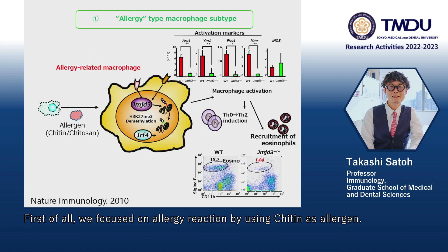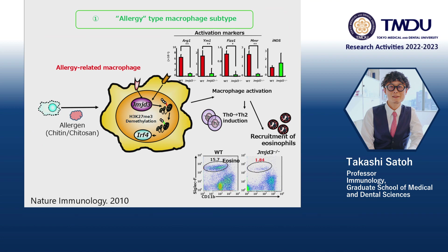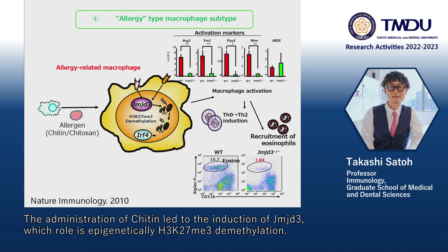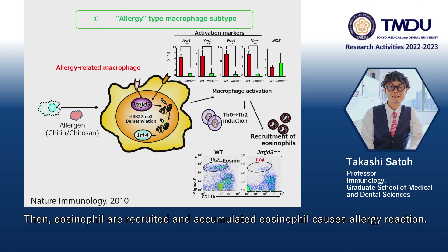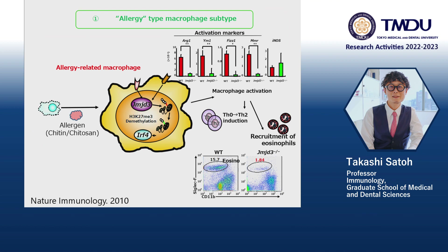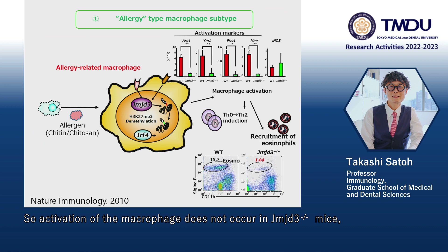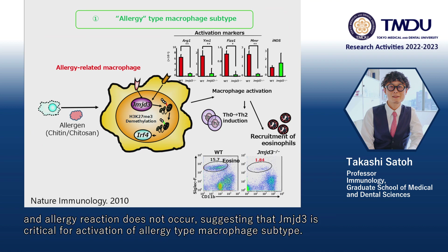First, we focused on the allergy reaction by using chitin as an allergen. The administration of chitin led to the induction of JMJD3, whose role is epigenetic H3K27Me3 demethylation. When induced JMJD3 unlocks IRF4, the expression of IRF4 is elevated and allergy-type macrophages are activated. Then eosinophils are recruited, and accumulated eosinophils cause the allergy reaction. Activation of macrophages does not occur in JMJD3 knockout mice and the allergy reaction does not occur, suggesting that JMJD3 is critical for activation of allergy-type macrophage subtypes.